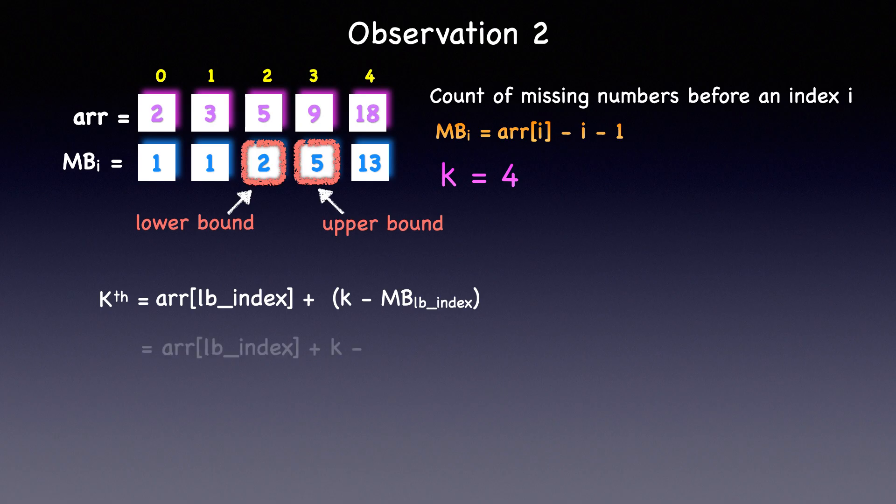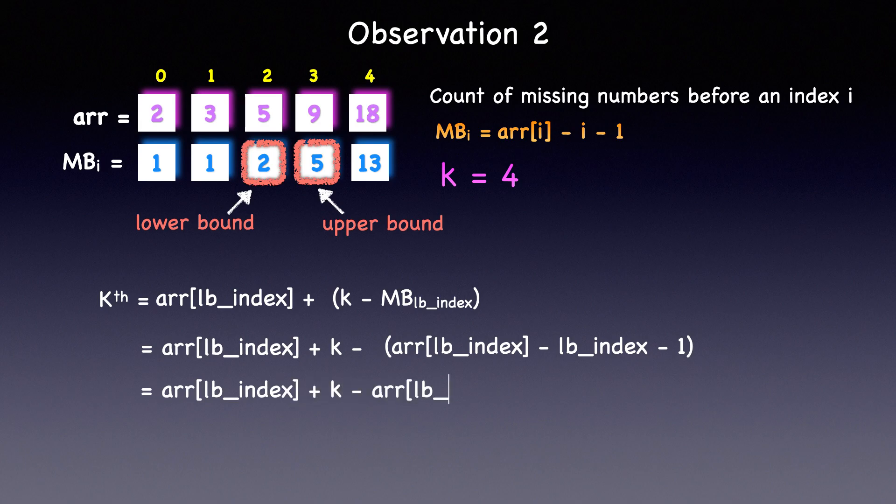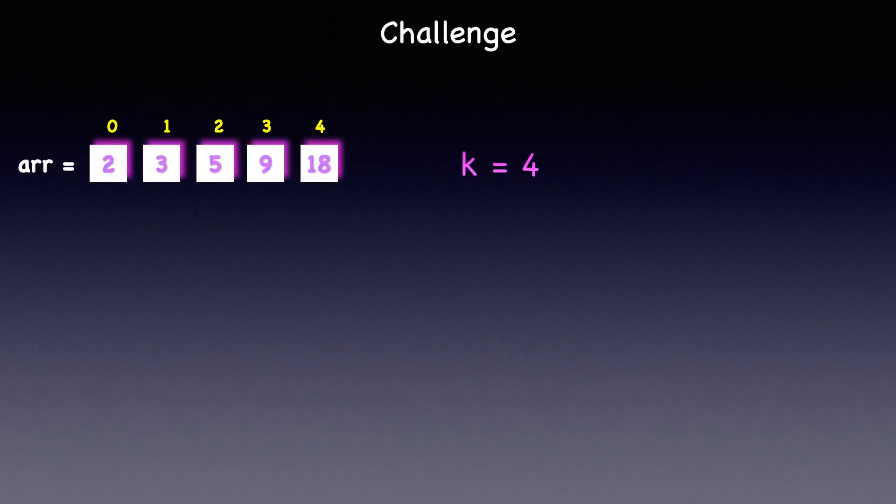Now, let's substitute this formula of missing before from up top, which is arr[lower_bound_index] - lower_bound_index - 1. So, let's expand this equation and remove the parenthesis. This will result in arr[lower_bound_index] + k - arr[lower_bound_index] + lower_bound_index + 1. So, the equation simplifies to k + lower_bound_index + 1, which can also be written as lower_bound_index + k + 1.